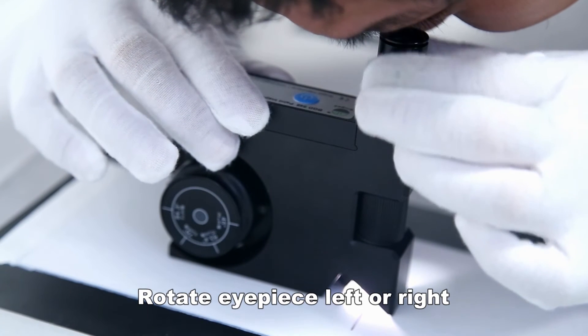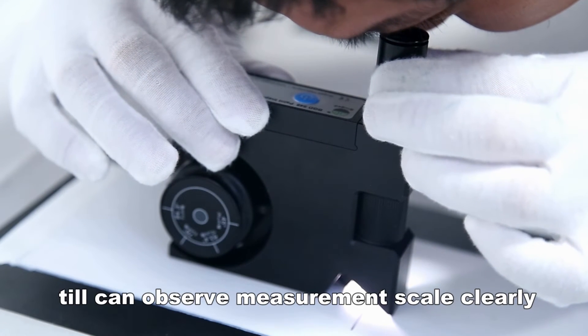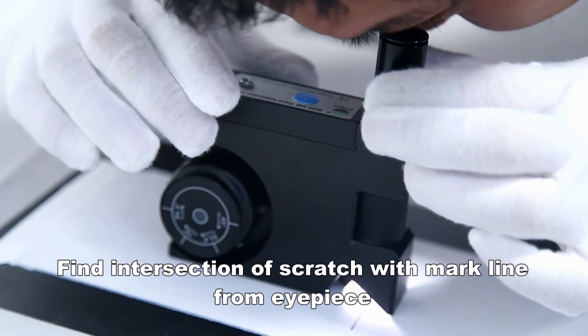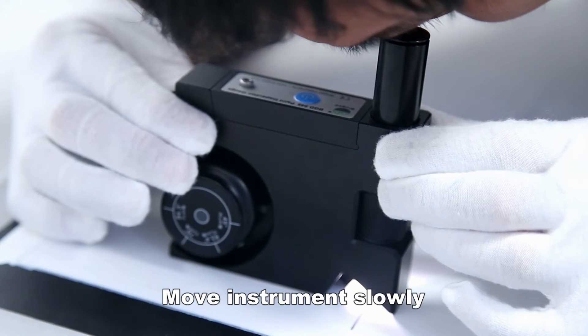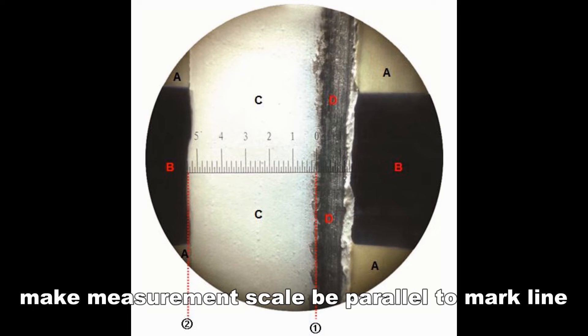Rotate the eyepiece left or right until you can observe the measurement scale clearly. Find the intersection of the scratch with the marked line from the eyepiece. Move the instrument slowly to make the measurement scale parallel to the marked line.